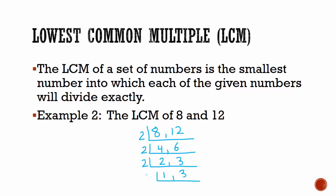2 cannot go into either 1 or 3 so we try the next prime number which is 3. 1 cannot go into 3 exactly. We write back the 1. 3 into 3 is 1.